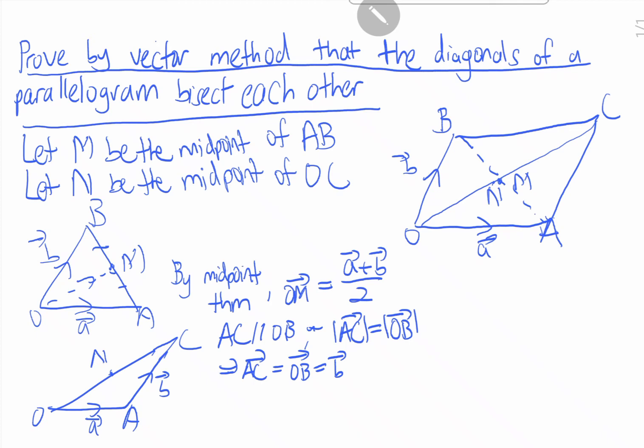So OC equals OA plus AC, which equals A plus B. And with that, since N is the midpoint of OC, which means that N splits the line OC equally, therefore ON equals half of OC, which equals A plus B over 2.